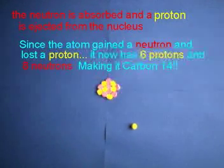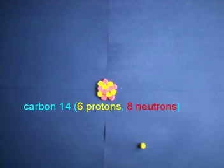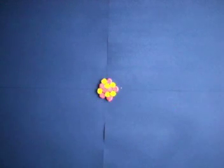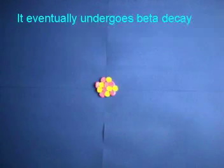This causes the nitrogen to change from a nitrogen to a carbon, since it now has six protons and eight neutrons. This is the formation of carbon-14.